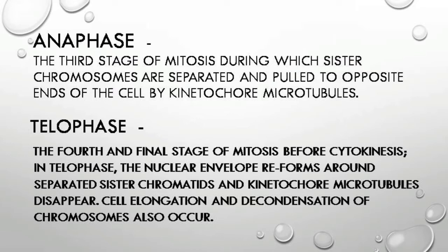In telophase, the nuclear envelope reforms around the separated sister chromatids, the kinetochore microtubules disappear, and cell elongation and decondensation of chromosomes also occur in this stage.